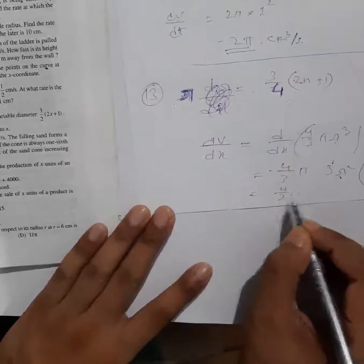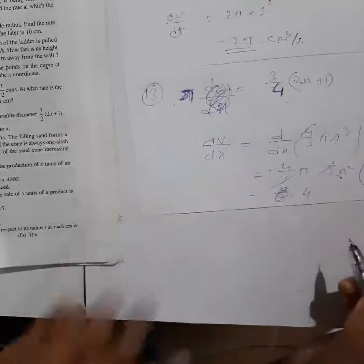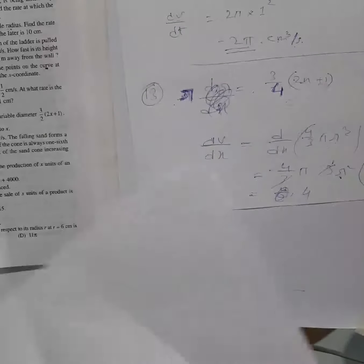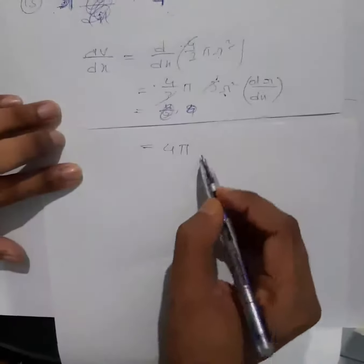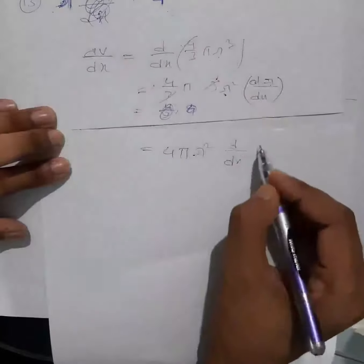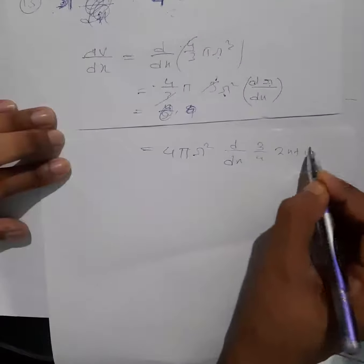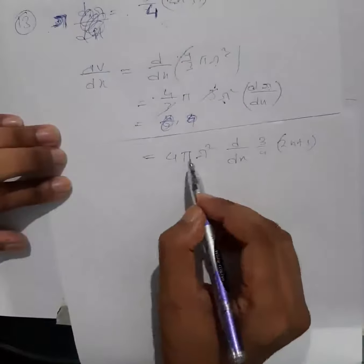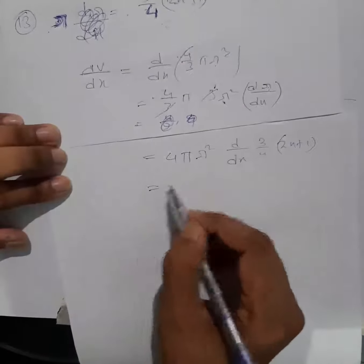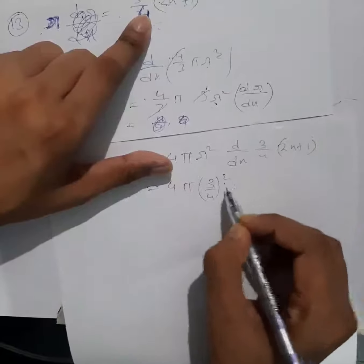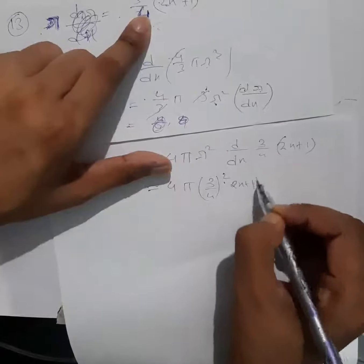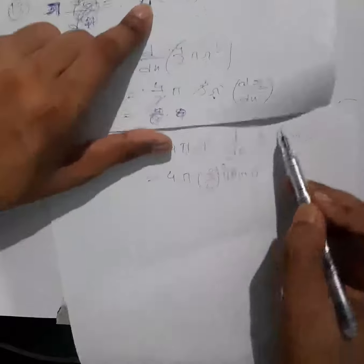The 3s cancel giving 4πr² · dr/dx. Now substituting r = (3/4)(2x+1), we replace r² with [(3/4)(2x+1)]², so the expression becomes 4π · (3/4)²(2x+1)² · dr/dx, where dr/dx is the derivative of (3/4)(2x+1).